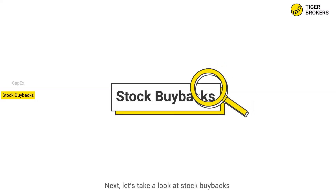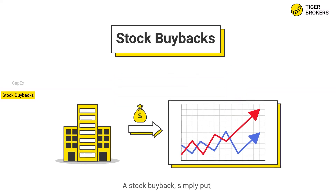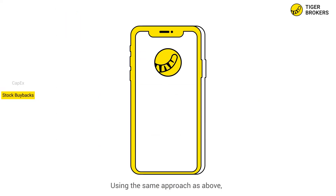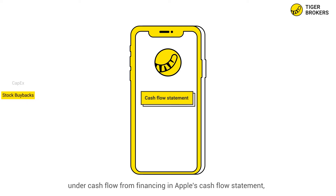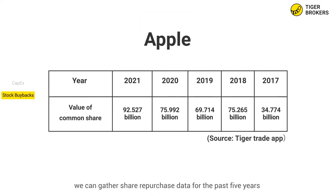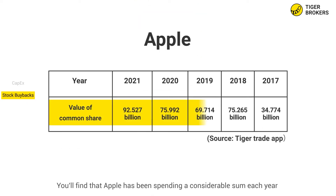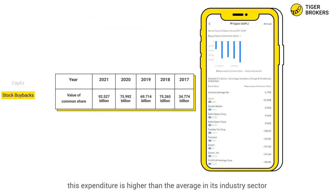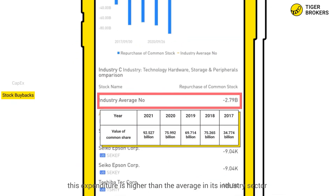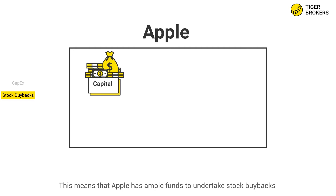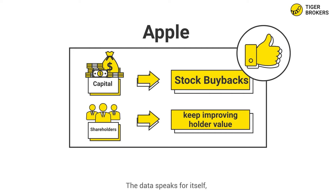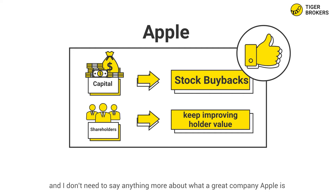Next, let's take a look at stock buybacks. A stock buyback, simply put, is when a listed company uses its own funds to repurchase its shares in the market. Using the same approach as above, under cash flow from financing in Apple's cash flow statement, we can gather share repurchase data for the past five years. You'll find that Apple has been spending a considerable sum each year repurchasing its own shares, and looking at the sector data in the Tiger Trade app, you can also see that this expenditure is higher than the average in its industry sector. This means that Apple has ample funds to undertake stock buybacks in order to keep improving shareholder value. The data speaks for itself, and I don't need to say anything more about what a great company Apple is.